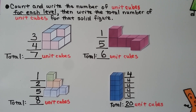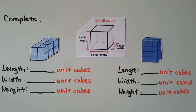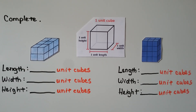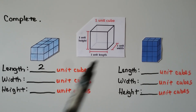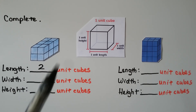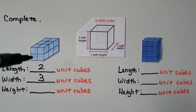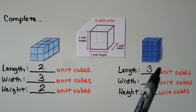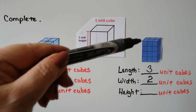We've learned that a unit cube has length, width, and height. For these rectangular prisms, we need to find their length, width, and height in unit cubes. For the first one, the length is two unit cubes, the width is three unit cubes, and the height is two unit cubes. For the second one, its length is three unit cubes across, its width is two unit cubes, and its height is four unit cubes.